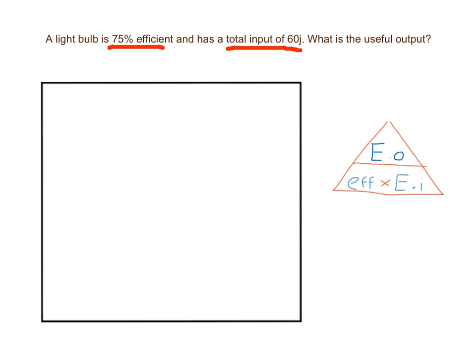So the question is asking us, what is a useful output? So there are steps that we can put in place to work this out. The first thing to do is use a formula triangle. Now, we're trying to calculate the useful output or the useful energy output. So that's this top part here, EO. So if we were to cover that with our hands, that would only leave us with the bottom section, which means that the formula for energy output is efficiency times energy input.